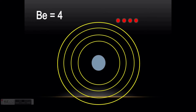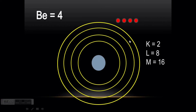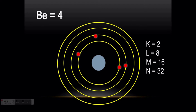Let's consider beryllium, whose atomic number is 4 — so it has 4 electrons. Before filling, we should know how many electrons each shell can accommodate: K-shell holds 2 electrons, L-shell holds 8, M-shell holds 16, and N-shell holds 32. The first two electrons go to the K-shell. Since K-shell can only accommodate 2, the third electron jumps to the L-shell, and this process continues.